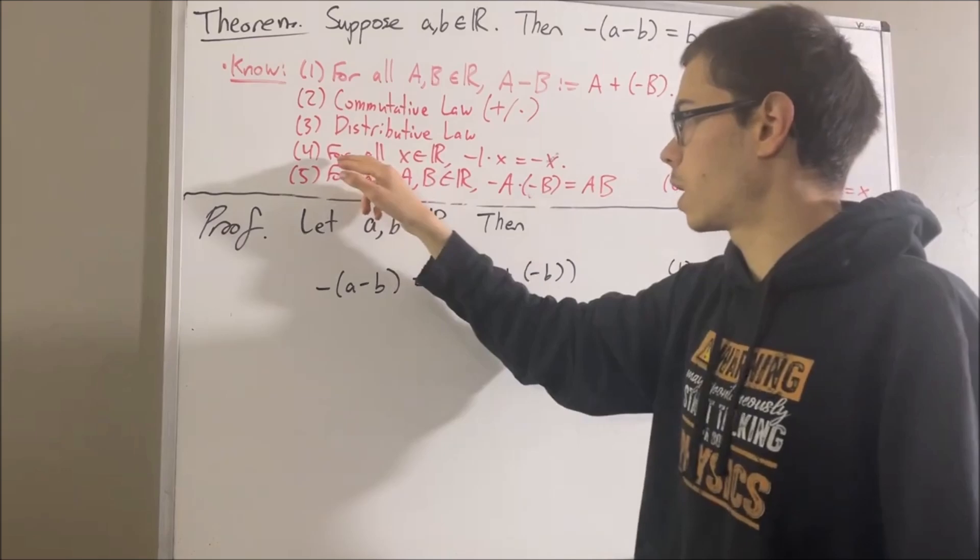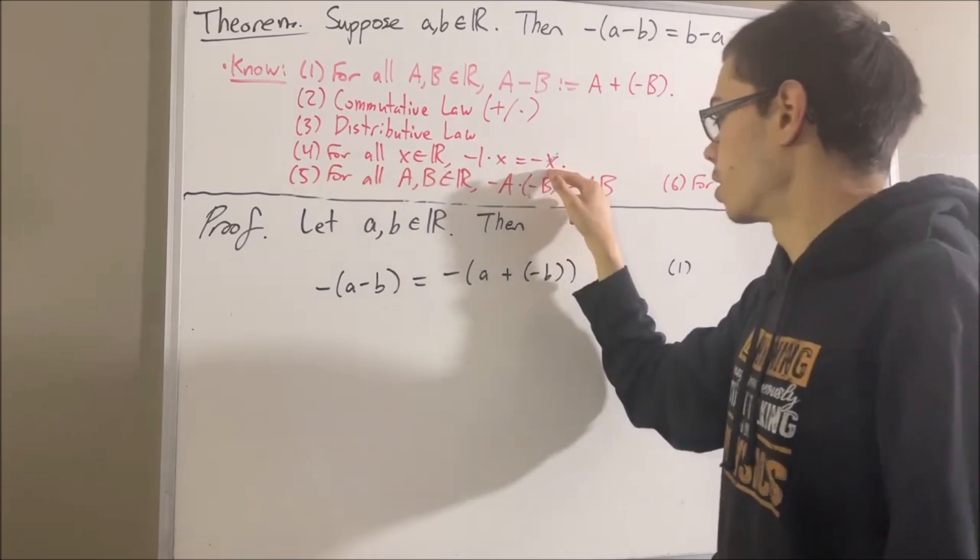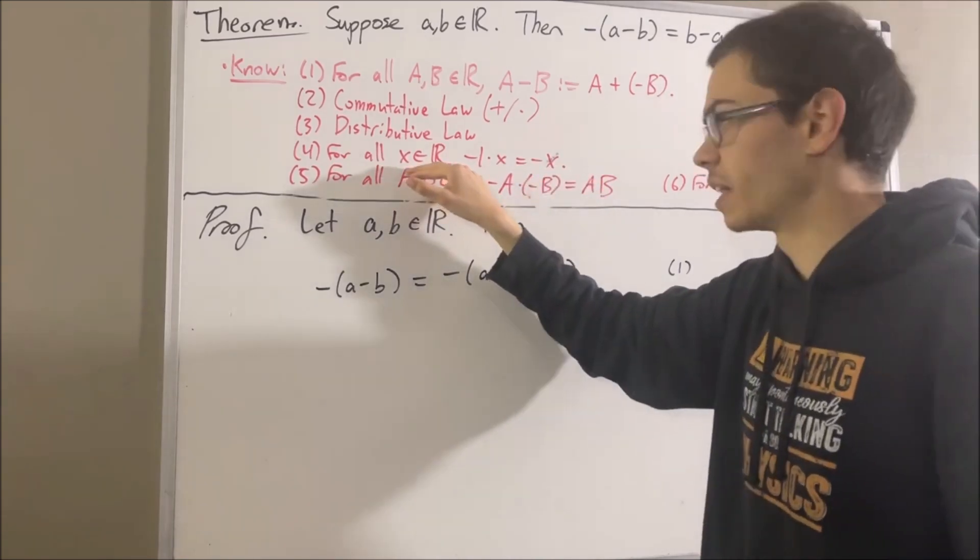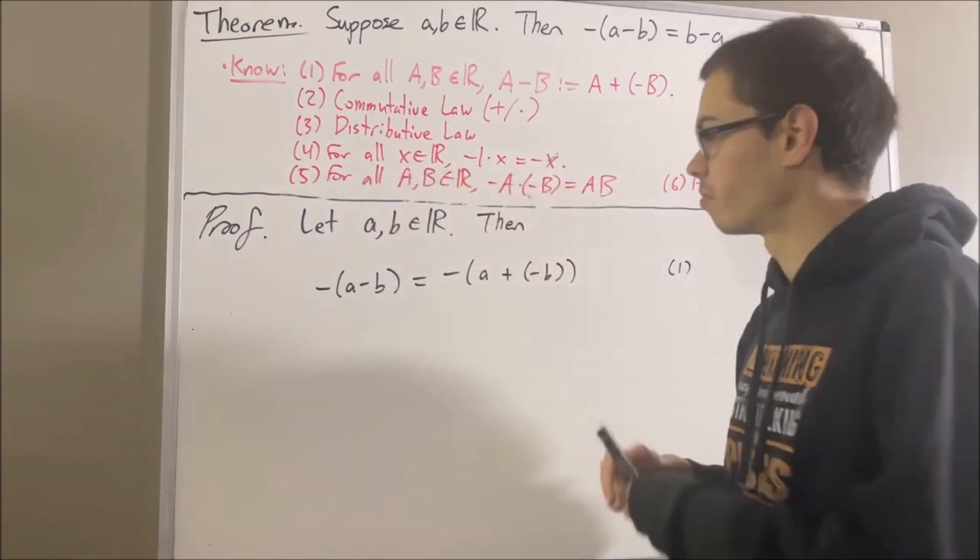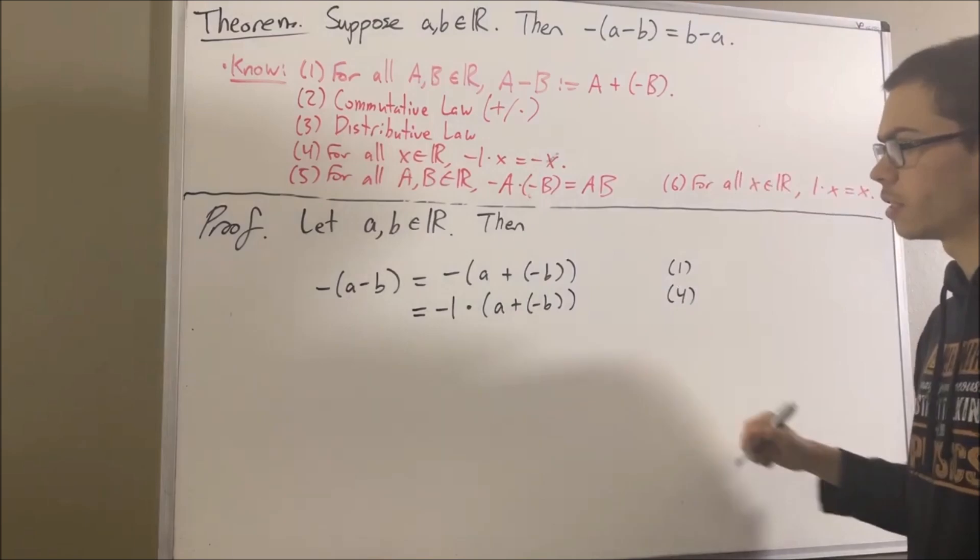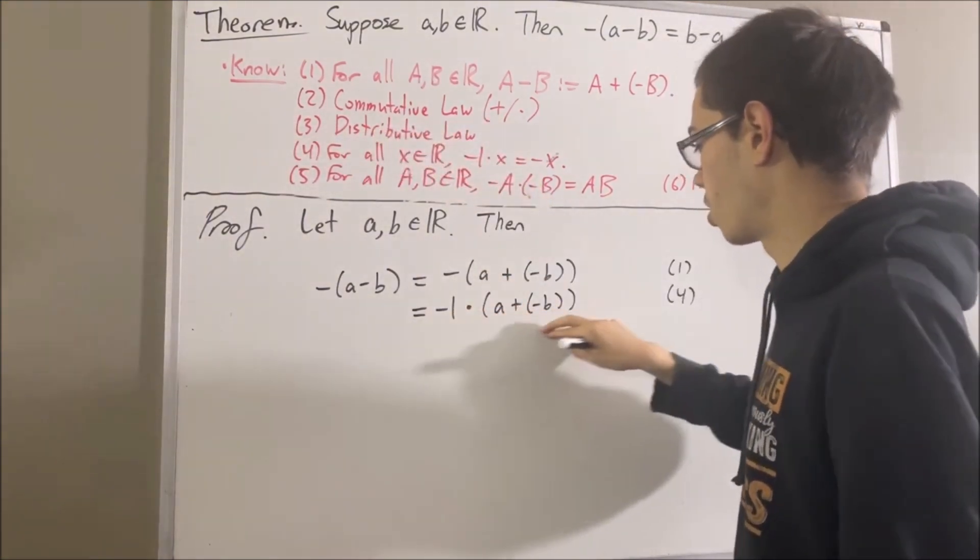Now, we're going to apply fact number four. For every real number x, this is true. So, if we call A plus negative B as x, then we can apply this rule. So just like that. Next, we're going to apply the distributive law. We're going to distribute the negative 1 across this parentheses.